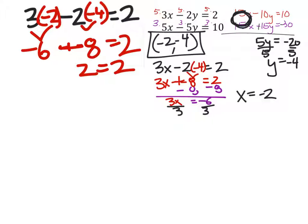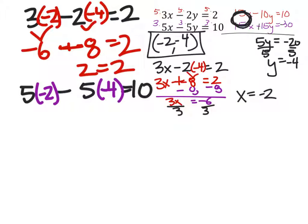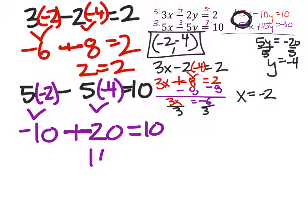In the next equation, I've replaced the x and y values with the values we think they are, and we'll just check. 5 times negative 2 is negative 10. Minus 5 times negative 4 is negative 20. That becomes a plus 20. So, negative 10 plus 20 is 10. This is 10. This helps us confirm that our answers are correct. This is a good way on a test or quiz to know that your answer is correct so that you may move on with confidence knowing you'll get full credit.